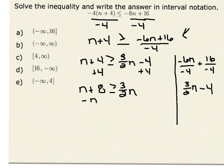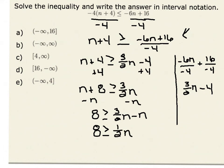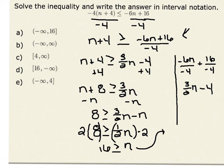Adding 4 to both sides gives us n plus 8 is greater than or equal to 3 halves n. Next, I could subtract n from both sides of my inequality, giving me 8 is greater than or equal to 3 halves n minus n. 3 halves n minus n is equal to 1 half n. Therefore, I have 8 is greater than or equal to 1 half n. In order to isolate n, I could multiply both sides by 2. 1 half times 2 is 1, so n is less than or equal to 8 times 2, which is 16. This is the same solution as before.